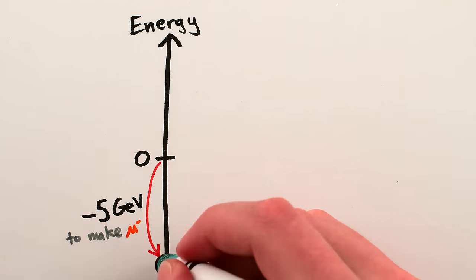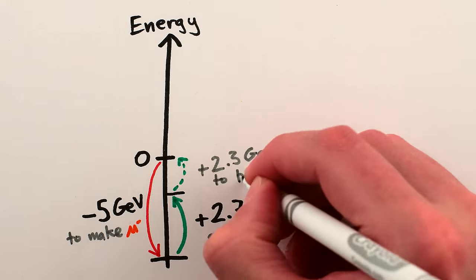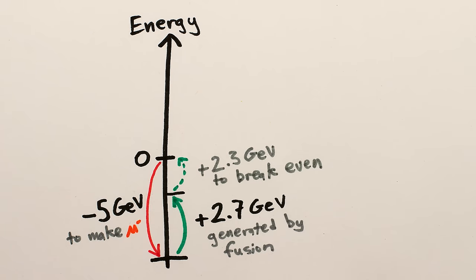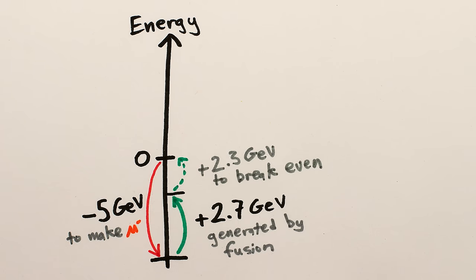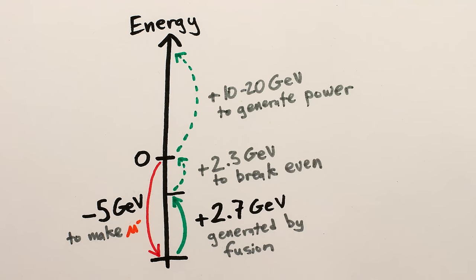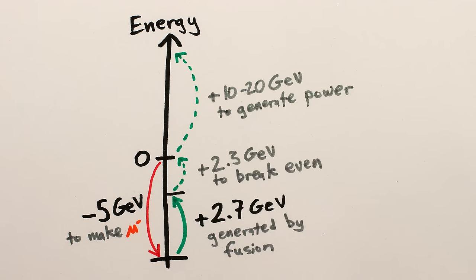This is the best case possible with current technology, and the numbers are still off by a factor of 2 before even reaching any sort of break even where muon facilitated fusion could generate as much energy as it consumes. And we'd need to be much better than just breaking even, energy-wise, to make a viable commercial power plant.